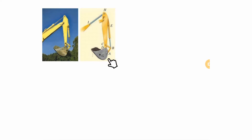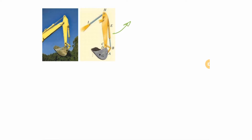Identifying two-force members is helpful because it reduces the number of unknowns. Instead of two unknowns per member, you have just one — the magnitude of the force along the connecting line. I identified four two-force members in this problem, which significantly simplifies solving it. Then we can proceed to the free body diagram of a selected part.